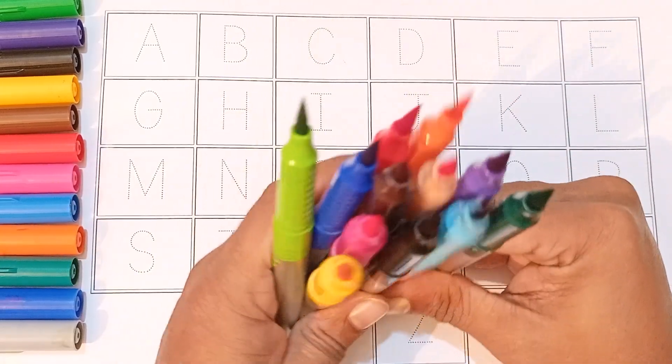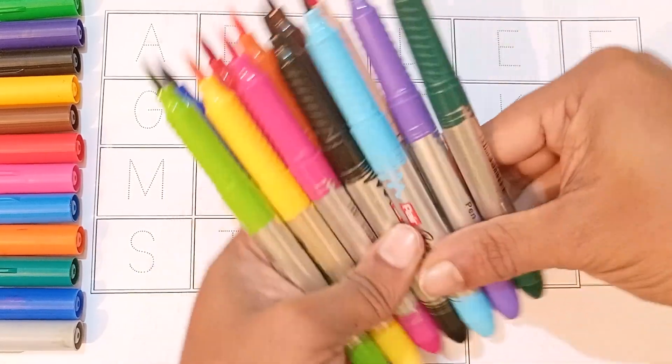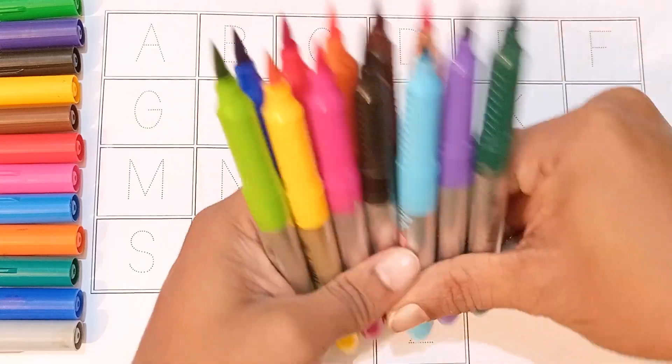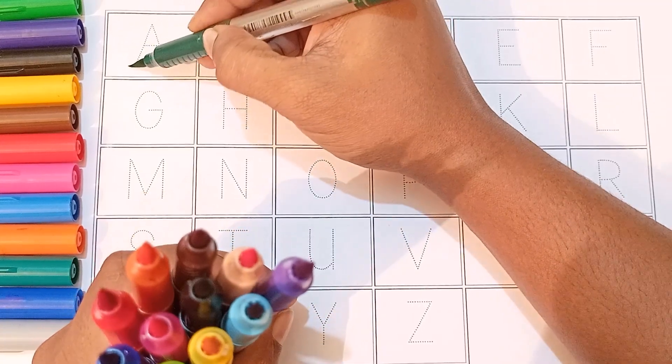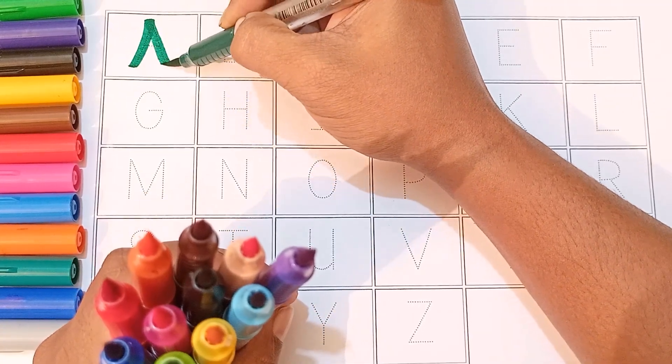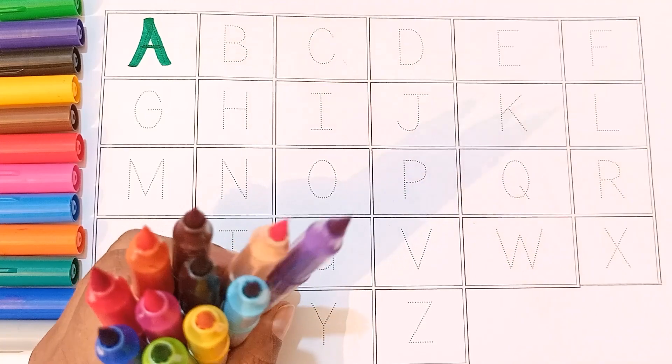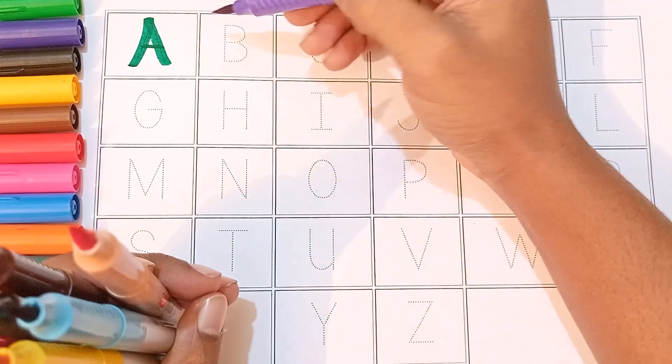Wow, now we will write and read A B C D, A to Z with this color paint. Okay, read and write. Let's start. Watch carefully till the last. Okay.